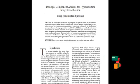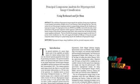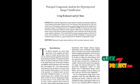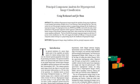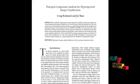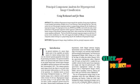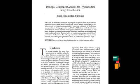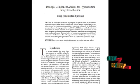Initially we are taking the hyperspectral image and preprocessing is applied. For applying preprocessing, we are applying the preprocessing concept to all the bands present in the hyperspectral image. For preprocessing, we are using a median filter, which removes the noises present in each band.